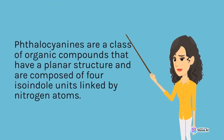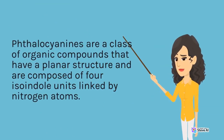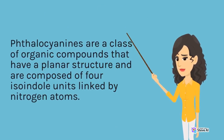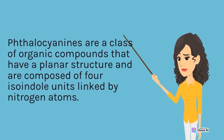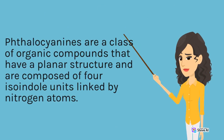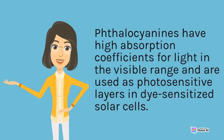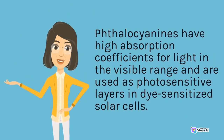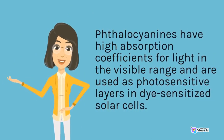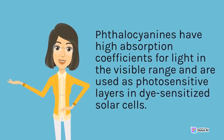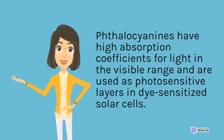Phthalocyanines are a class of organic compounds that have a planar structure and are composed of four isoindole units linked by nitrogen atoms. They have high absorption coefficients for light in the visible range and are used as photosensitive layers in dye-sensitized solar cells.